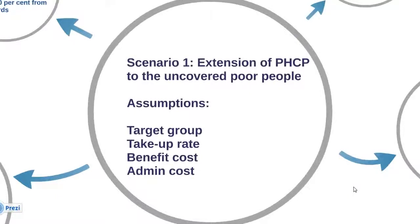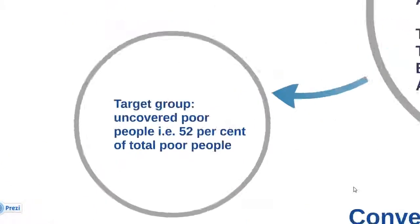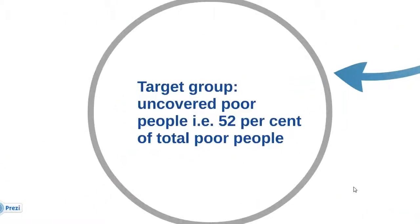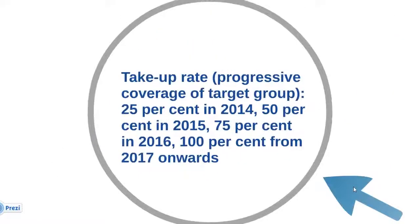Since 48% of the poor population is covered by PHCP, we can define the target group of uncovered people as 52% of the poor population in the country. The take-up rate is assumed to grow from zero to full coverage. We can assume that the implementation of the scenario will start in 2014, with 25% coverage of the target group, and increase by 25% every year.